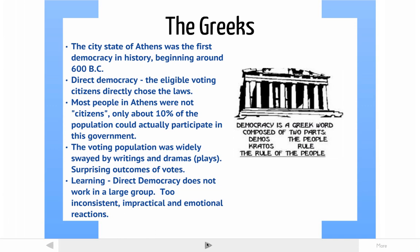We'll begin by taking a quick look at the Greeks and what they believed about government. The city-state of Athens, which was in Greece, was the first democracy in history. It happened somewhere in the 600 BCs — the exact year is not really important. Democracy is a Greek word. "Demos," the first part of the word, means "the people," and "kratos" means "rule" — so it basically means the rule of the people.